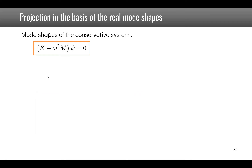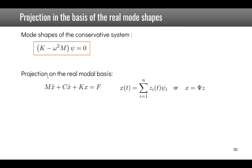Complex mode shapes are not often used in practice. Instead, the idea is to project the equations of motion onto the real mode shapes. Assuming x(t) can be written as a sum over n mode shapes of z_i(t) times psi_i — or in matrix notation x = Psi·z — and substituting into the damped equation of motion introduces a new damping term.